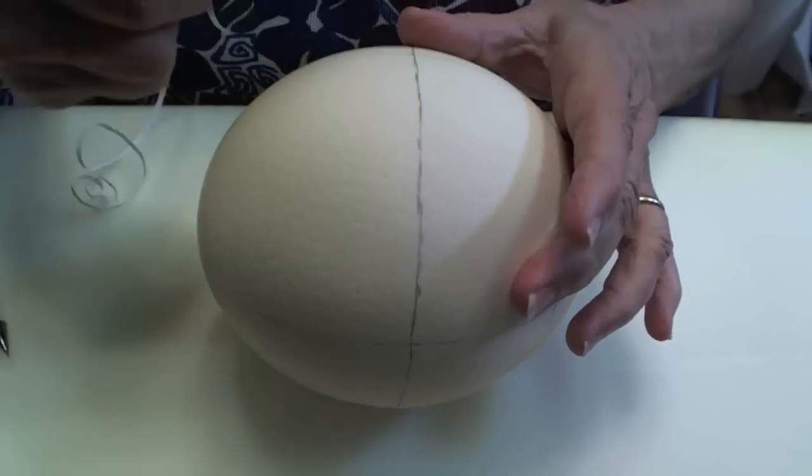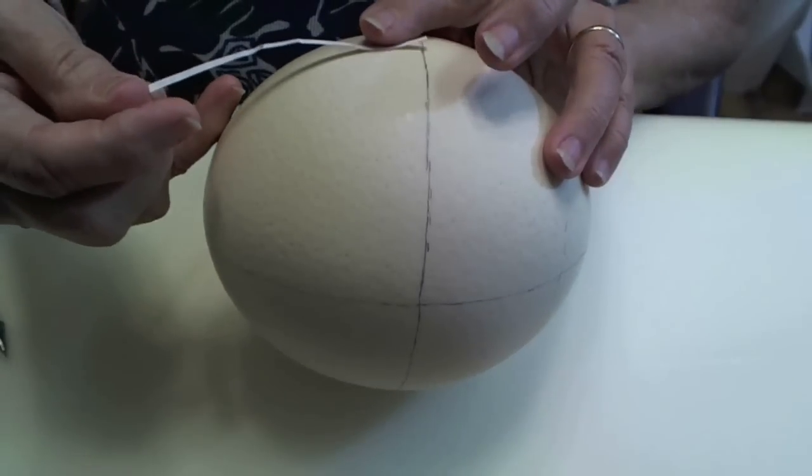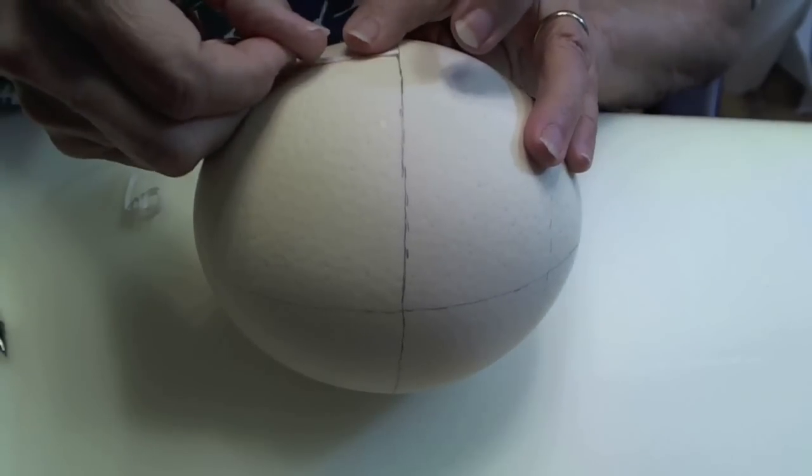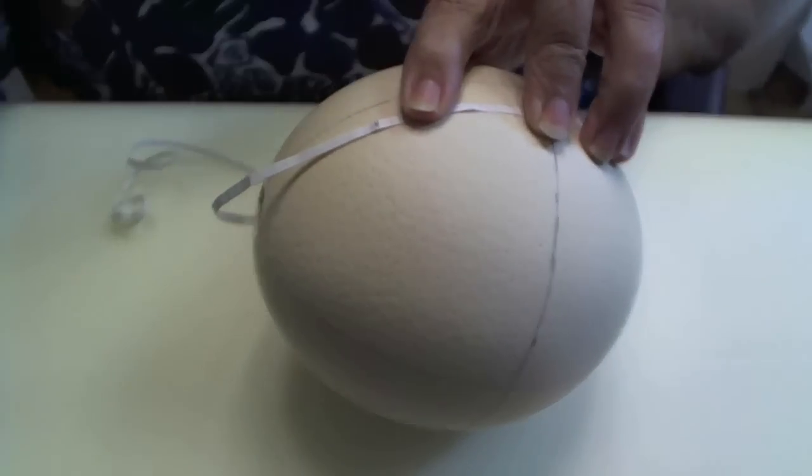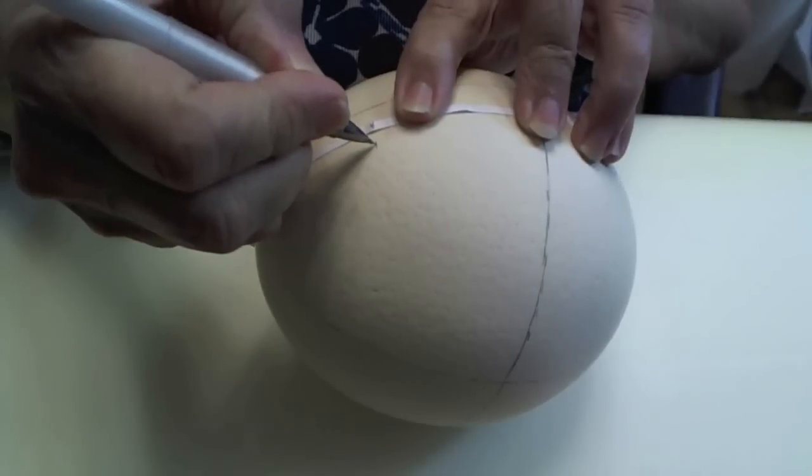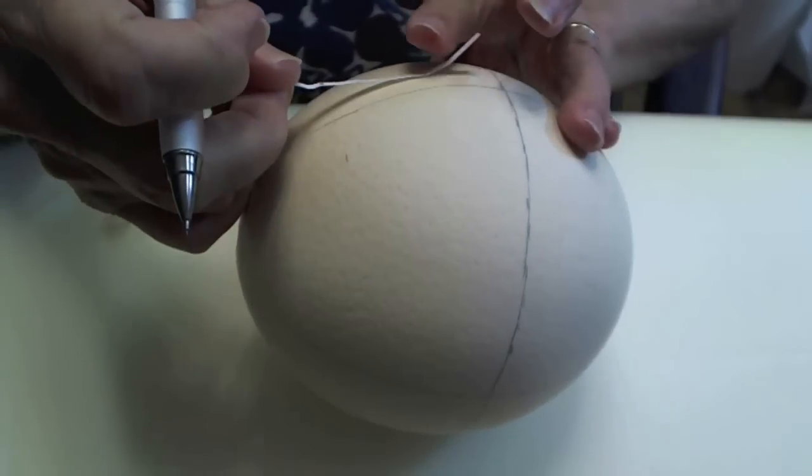We're going to first start out by dividing our baba egg into six sections. We need these six sections for any size egg, whether ostrich, goose, chicken.